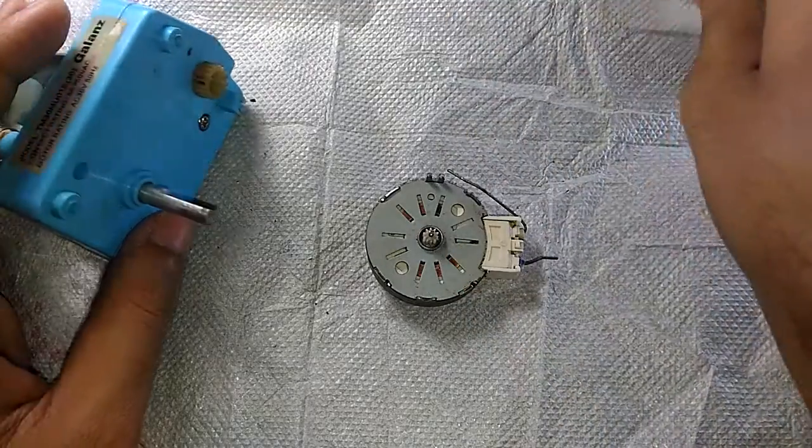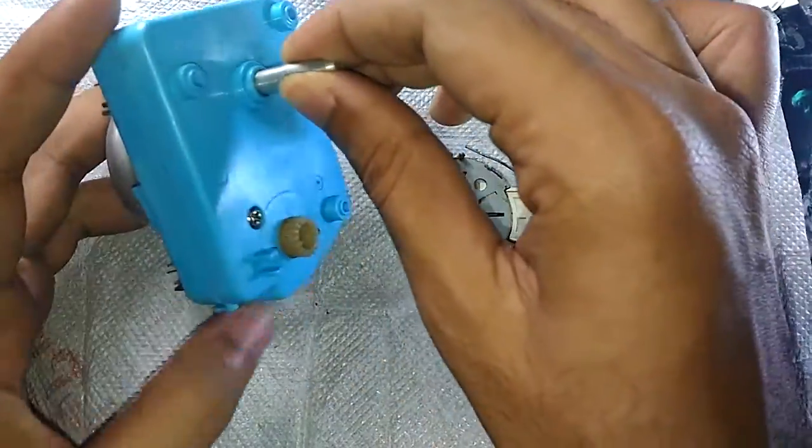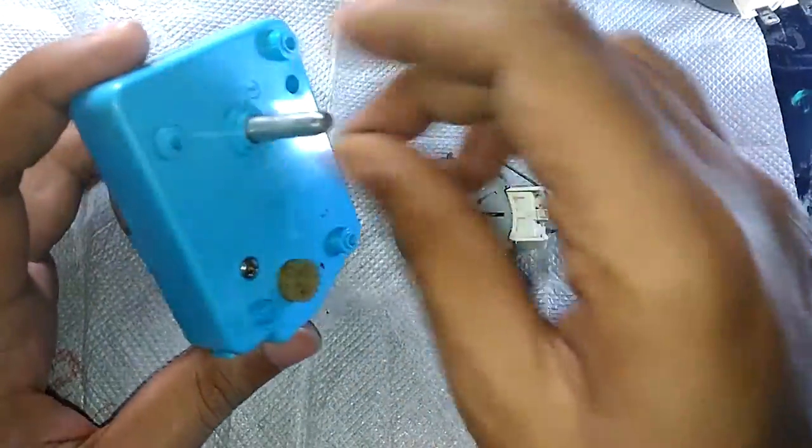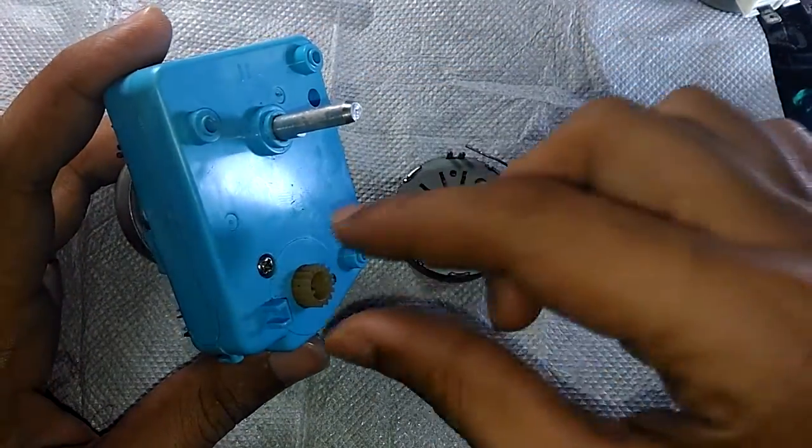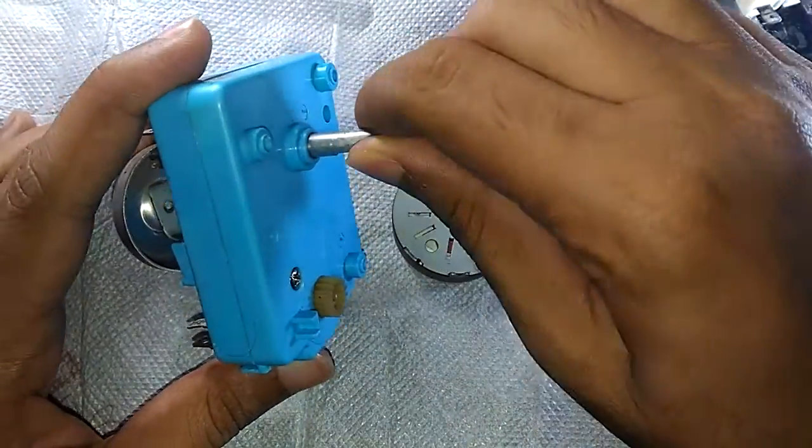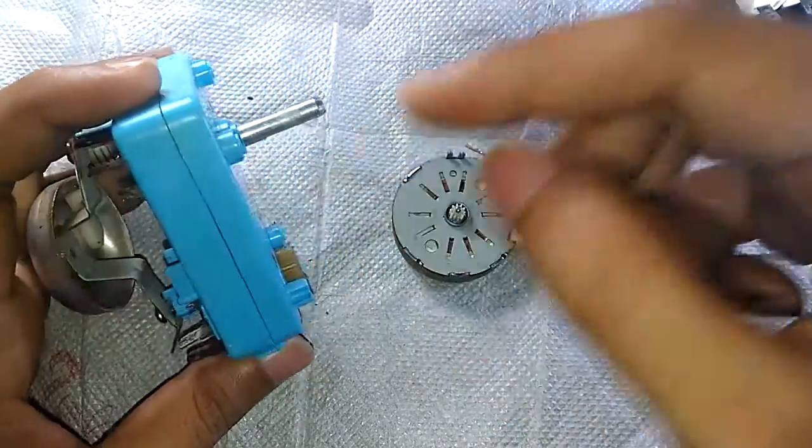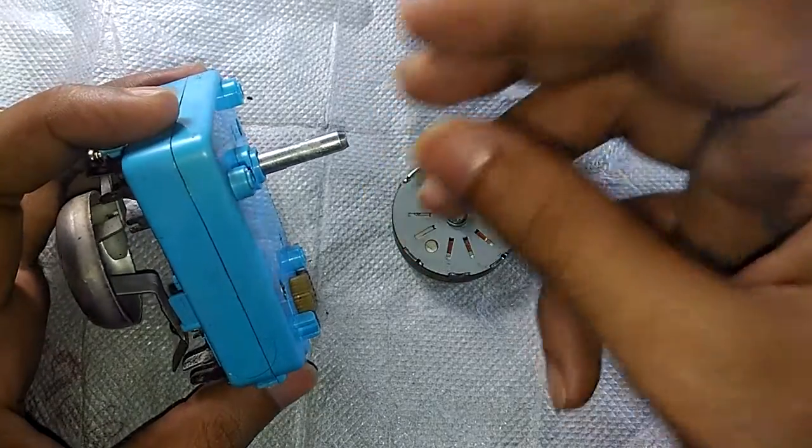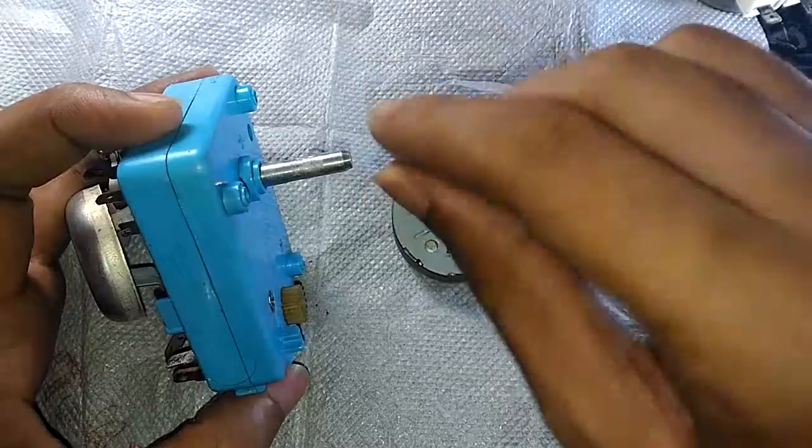So basically how it operates is that there are two dials for this thing. You can see one over here and the other one was supposed to be here. This thing turns some gears inside which in turn determines for how long your food will get cooked. This is the knob that adjusts the time delay.